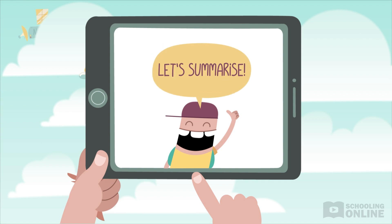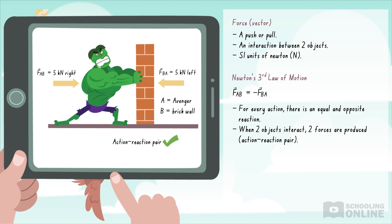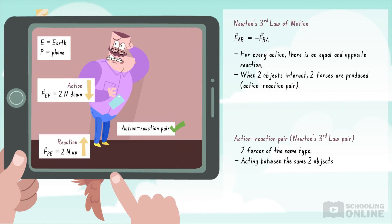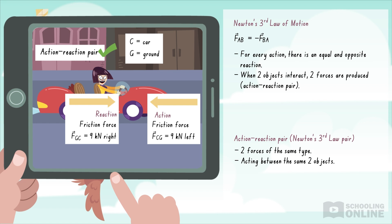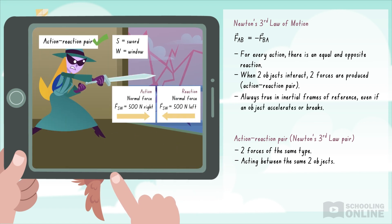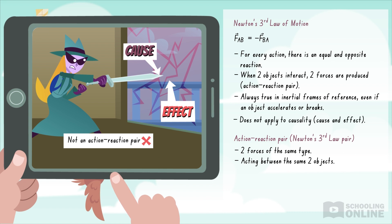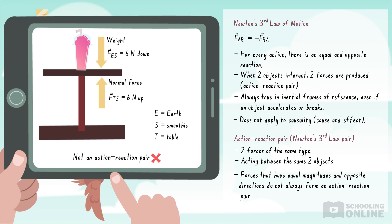Let's revise what we've covered in this lesson. Newton's third law tells us that when two objects interact, two forces are produced — they are equal in magnitude and opposite in direction. An action-reaction pair involves two forces of the same type acting between the same two objects. A car's engine turns the wheels and pushes the ground backwards; by Newton's third law, the ground pushes the car forwards, allowing it to accelerate. Newton's third law is always true, even if an object accelerates or breaks. However, it cannot be used to describe causality or cause-and-effect relationships. If two forces have the same magnitudes but opposite directions, it does not guarantee that they form an action-reaction pair.